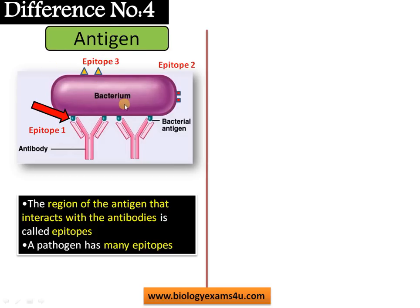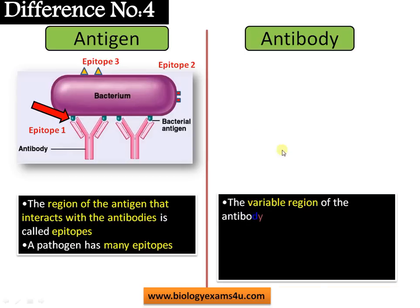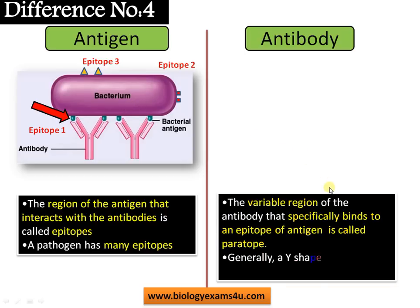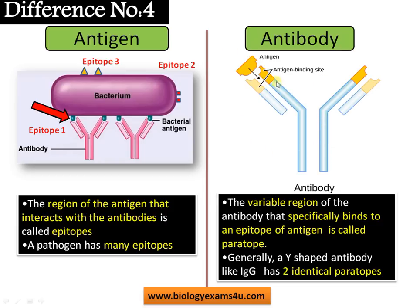A single pathogen may have a number of epitopes. On the other hand, the variable region of the antibody that specifically binds with the epitope of an antigen is called a paratope. Generally, a Y-shaped antibody like IgG has two identical paratopes. The antigen binding site is the variable region where amino acids are highly specific and can recognize the antigen that fits there — this region is called the paratope, which lies in the FAB region or antigen binding region.